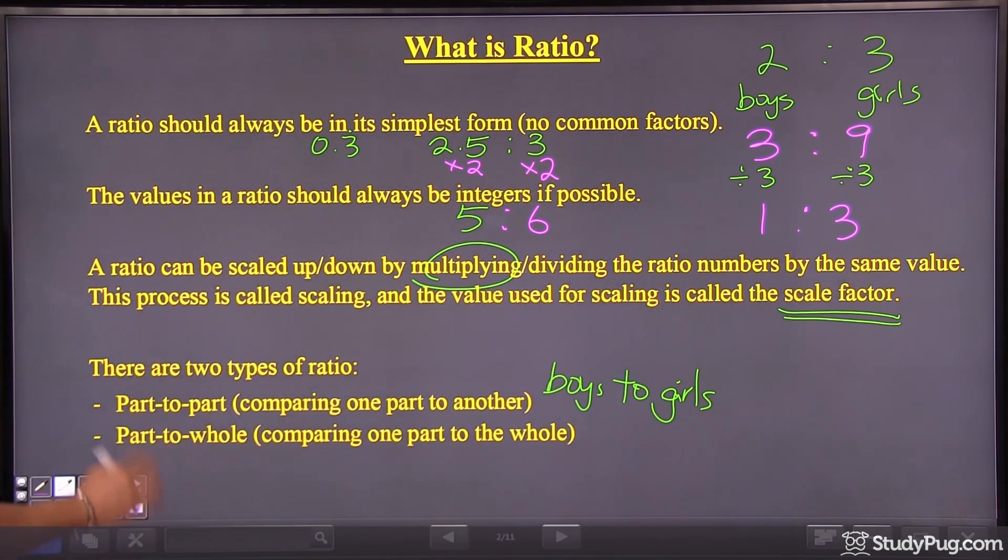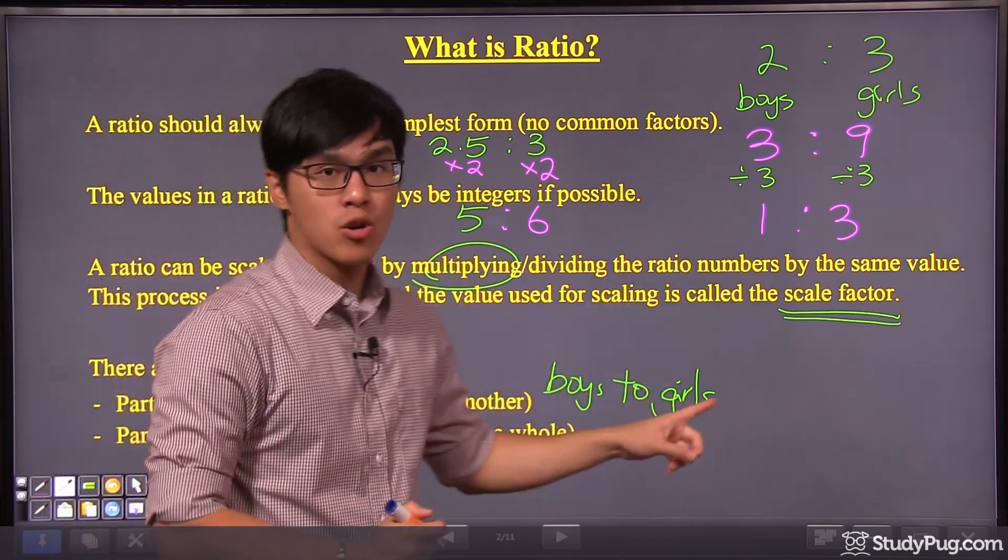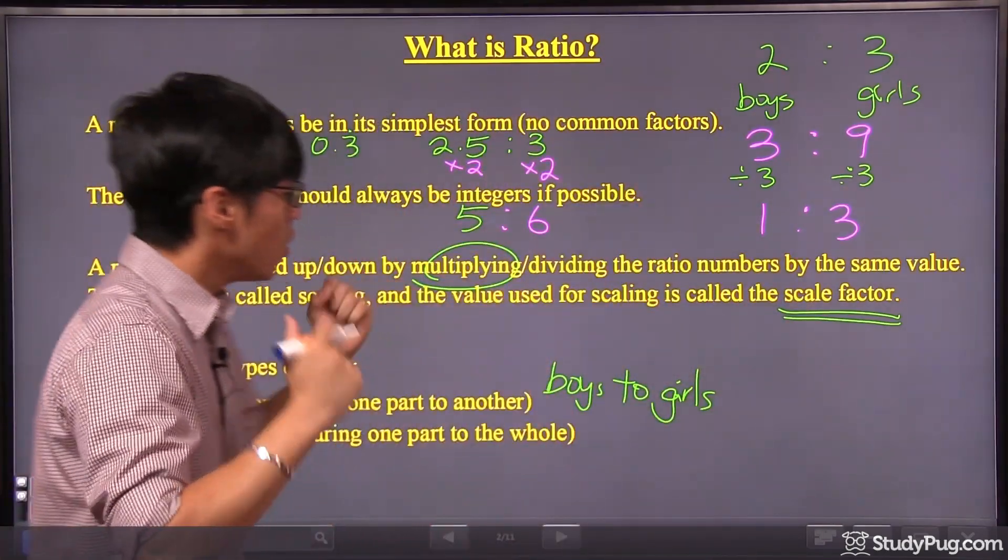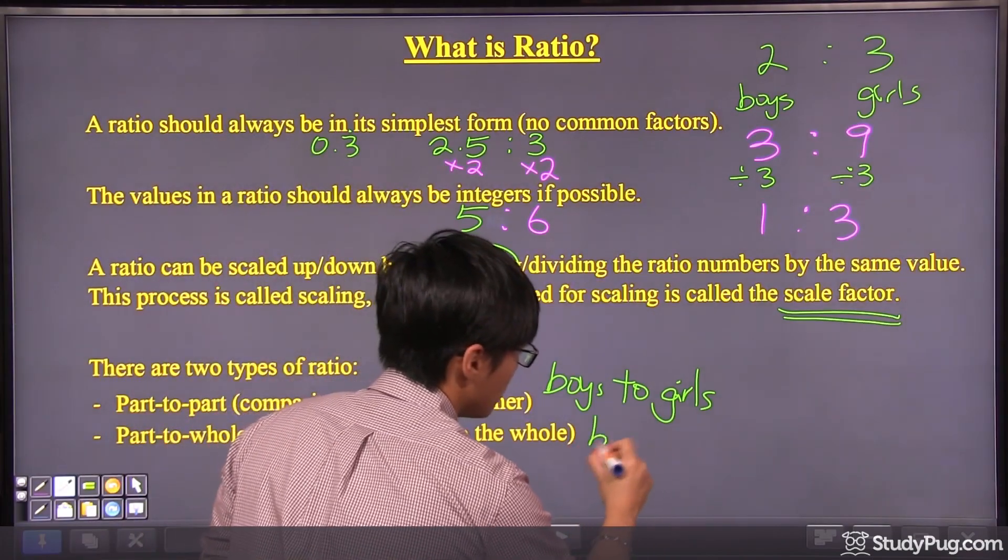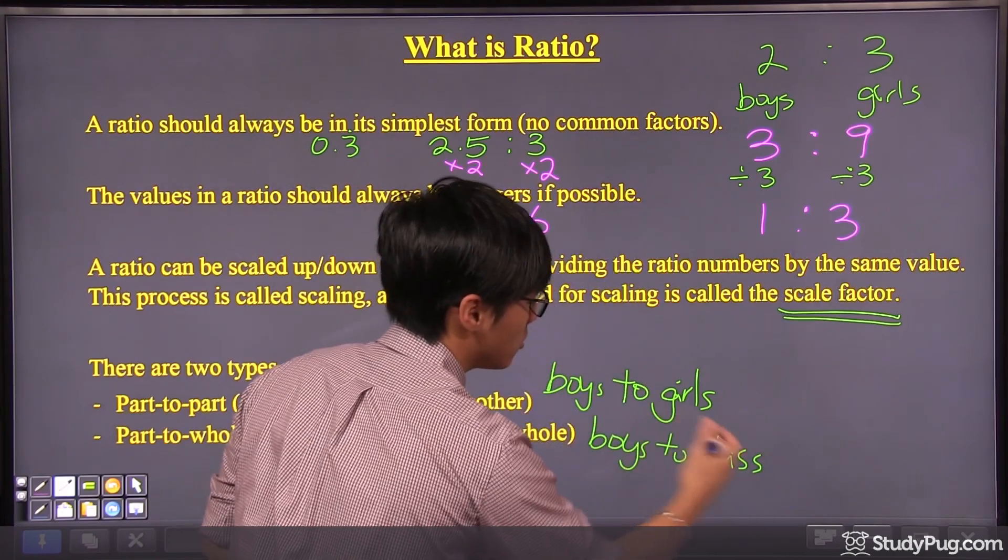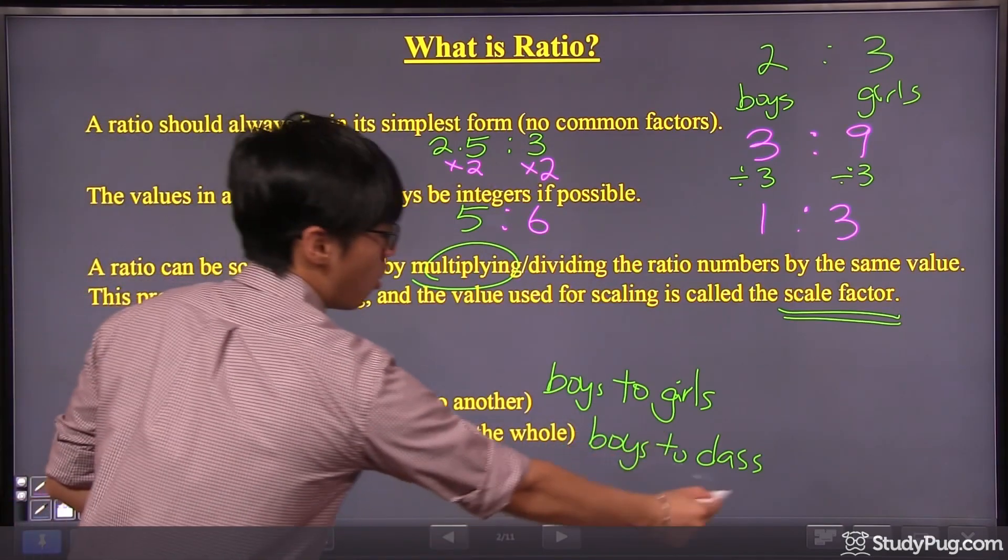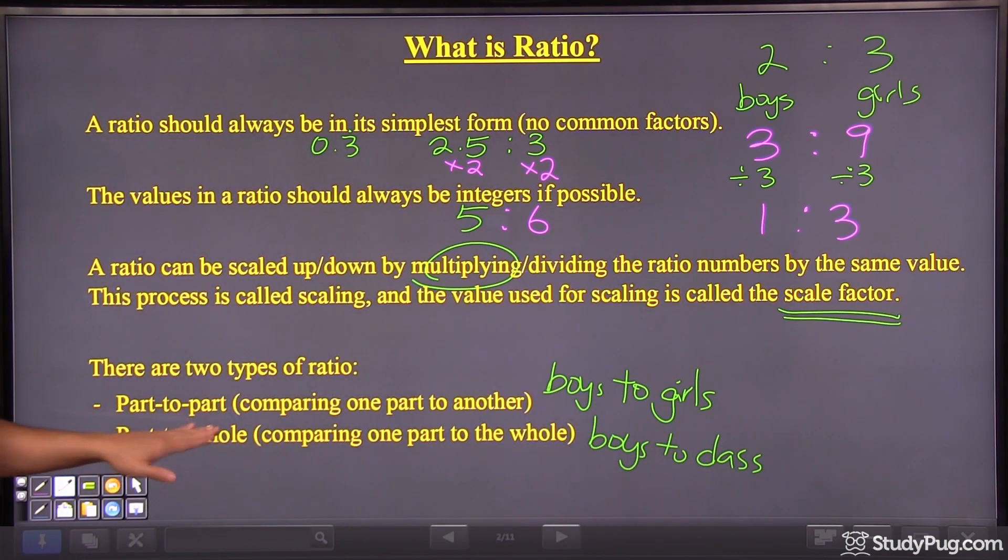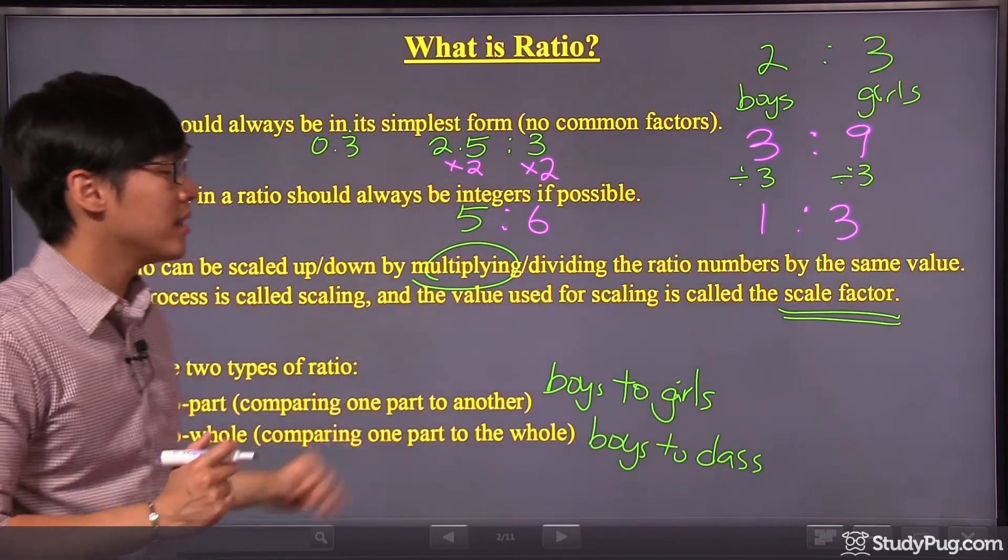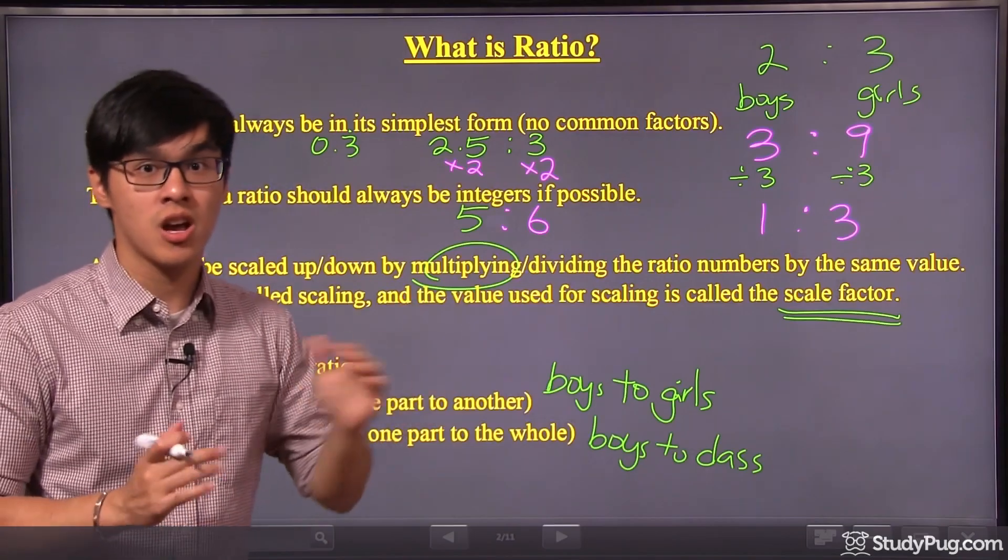Next, the other type of ratio, it's called part-to-whole. Using the same example, we have boys and girls. They are both part of a class. So the class is the whole picture. So if we are comparing, let's say, boys to all the students in the class, boys to class, then we are now comparing the part of the class to the whole class. So that's why it's called part-to-whole. Now, I will go into details of this concept in a little bit, but now let me first use an example to clear up our definitions of ratios.